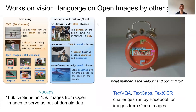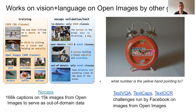I would also like to mention works on vision and language on Open Images by other groups: the NoCaps effort annotated lots of captions on the validation and test sets of Open Images to be used as out-of-domain data, with training on COCO and Open Images bounding boxes — and since Open Images has far more classes than COCO, captions mention many objects for which there were no captions during training, enabling interesting generalization. Facebook released a series of datasets and challenges based on scene text, with annotations for bounding boxes and transcriptions of text in scenes, as well as a text VQA challenge with questions like 'what number is the yellow hand pointing to.'